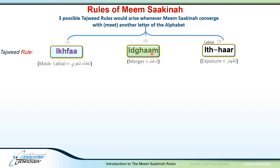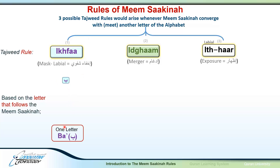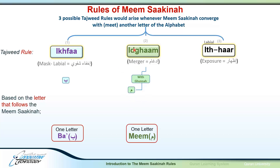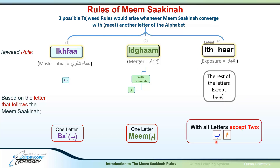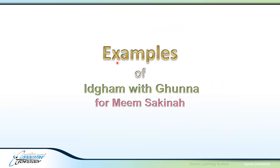To summarize, the Meme Sakina has three possible Tajweed rules: Ikhfa Shafawi — Labial Masking — when followed by Ba; Idgham with Ghunnah — Merger — when followed by Meme; and Idhar Shafawi — Labial Exposure — when followed by any other letter. Idgham occurs only with Meme, Ikhfa occurs only with Ba, and Idhar is caused by all remaining letters of the alphabet.